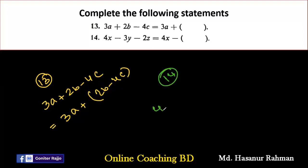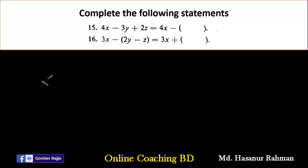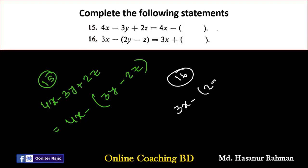Number 14 says: 4x minus 3y minus 2z. After minus we add the bracket: minus 3y divided by minus gives plus 3y, minus 2z divided by minus gives plus 2z. So 4x minus (3y plus 2z). Number 15 says: 4x minus 3y plus 2z. After minus we add the bracket: minus 3y divided by minus gives plus 3y, plus 2z divided by minus gives minus 2z. So 4x minus (3y minus 2z).